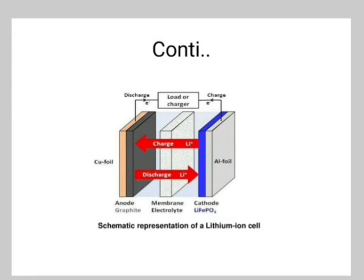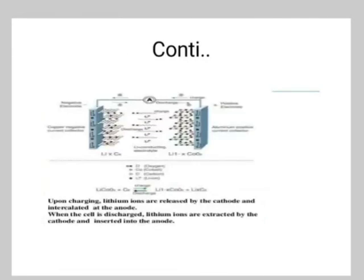This diagram shows the schematic representation of a lithium-ion cell. Upon charging, the lithium ions are released by the cathode and integrated at the anode. When the cell is discharged, the lithium ions are extracted by the cathode and inserted into the anode. Next, we will see the lithium-ion phosphate.